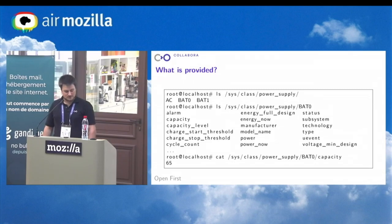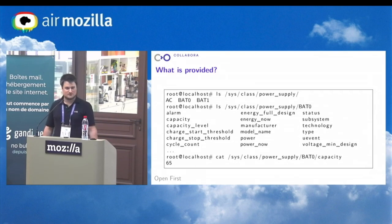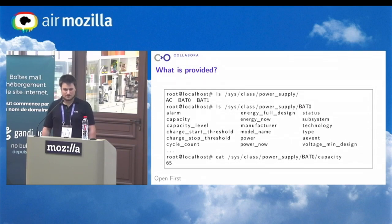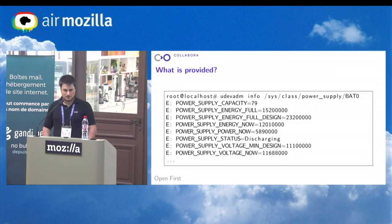So what does it provide? There's a huge amount of information coming especially from batteries, as you can see in this example from this notebook. It's exposed as normal files, so you can just read them and write into them — at least some of them are writable. As an alternative to just reading them, it's also possible to get them via UDEV, which is the preferred way because you will get pushed new information when interrupts come in.